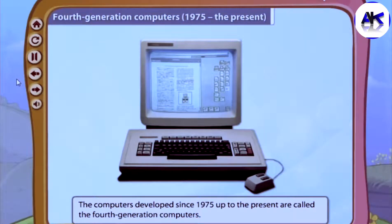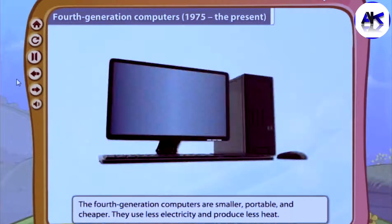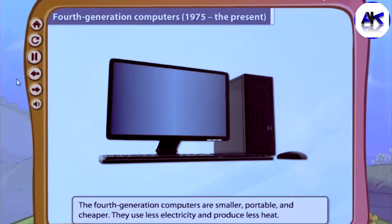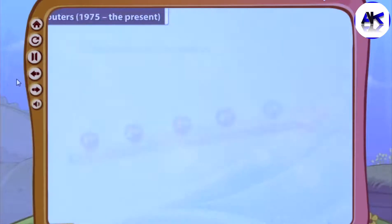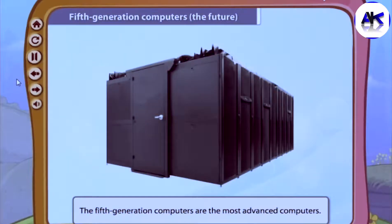Computers developed since 1975 up to the present are called fourth generation computers. They use microprocessors — a small silicon chip on which thousands of circuits are placed. Fourth generation computers are smaller, portable, and cheaper. They use less electricity and produce less heat.